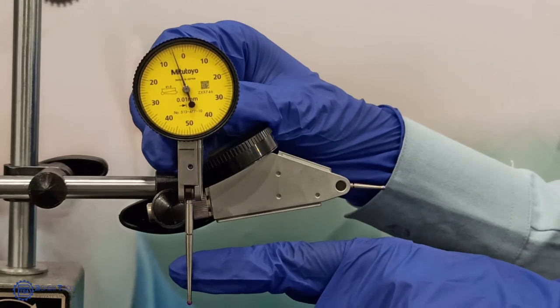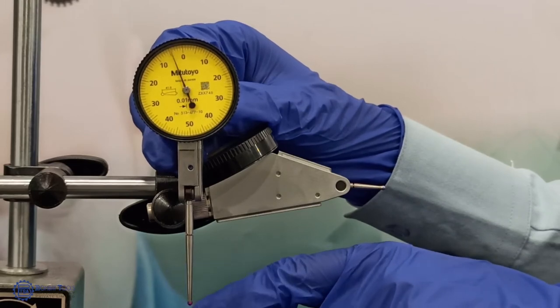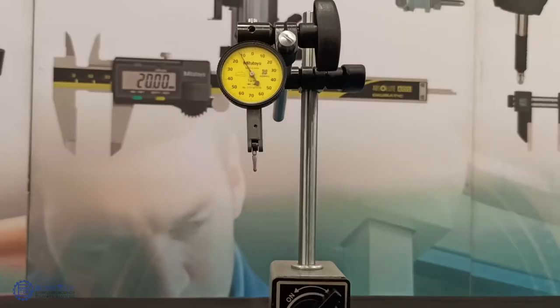The third one is the measurement force varies inversely with stylus length. How to use a lever dial indicator?